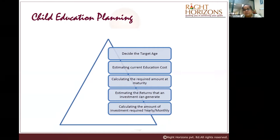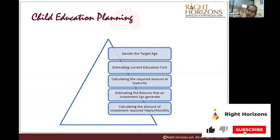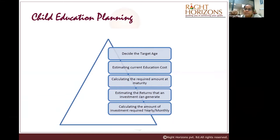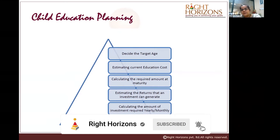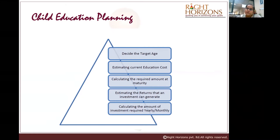We calculate what investment is needed and then work backward to determine how much we should have accumulated by a certain time. A very common mistake is when people say their kid is around three or five years old and they want 20 lakhs by age 18. I keep saying that 20 lakhs in the future has a present value of around 8 to 10 lakhs today. The better way is to state today's cost, add inflation to that, and then plan accordingly — because 20 lakhs now feels large, but after 10 to 15 years it may not hold the same value.